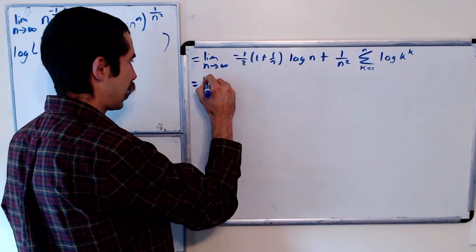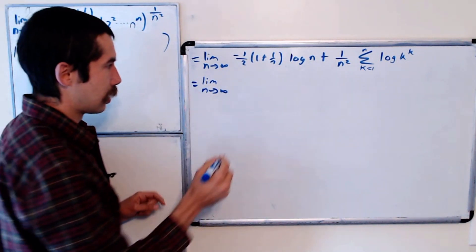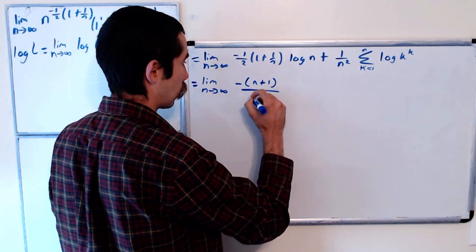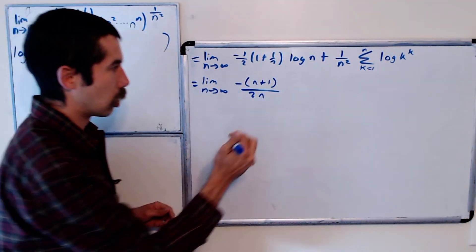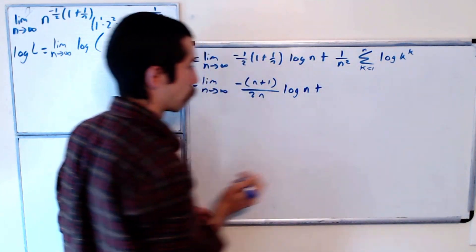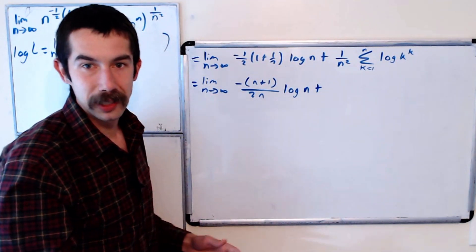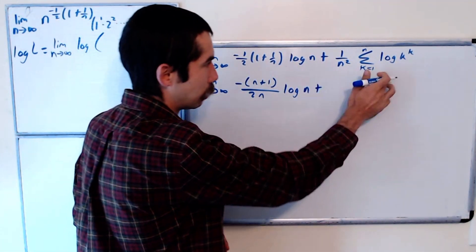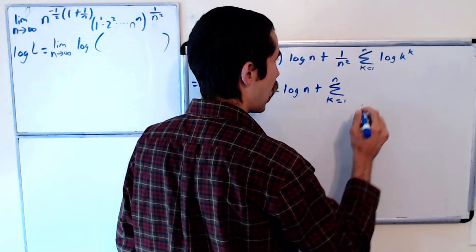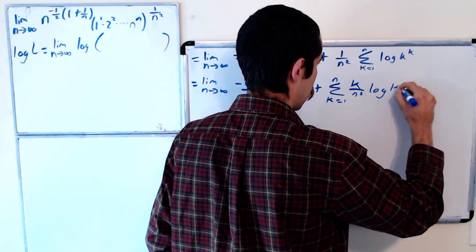All right, so far nothing too crazy. Again this is the limit as n goes to infinity. Let's clean this up a bit. This is negative n plus 1 over 2n log of n plus—we have log of k to the k, we could bring the k's out in front. And I'll actually bring this into the sum. So the sum from k equals 1 to n of k over n squared log k.